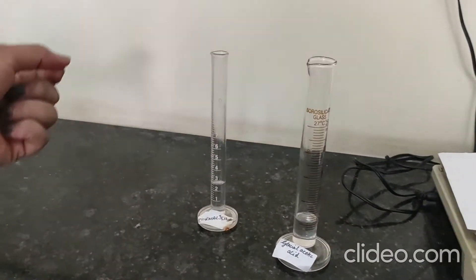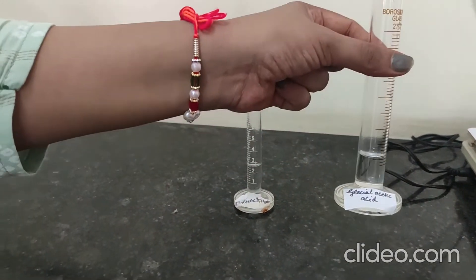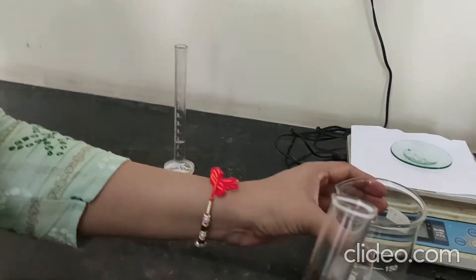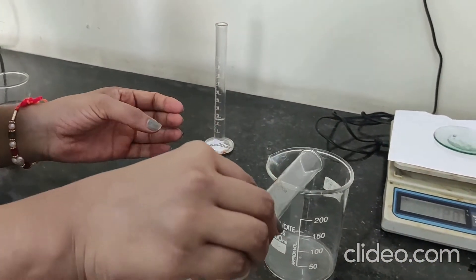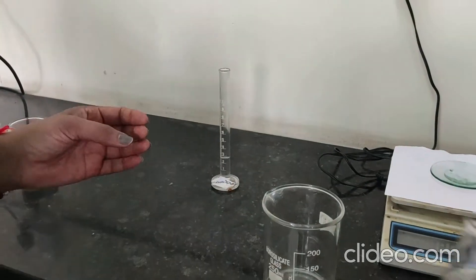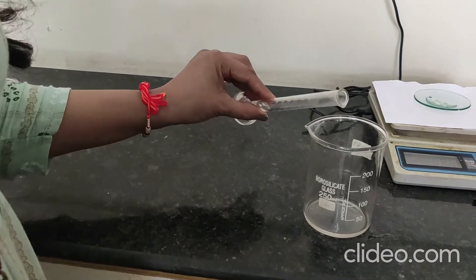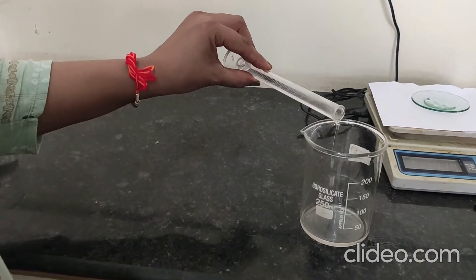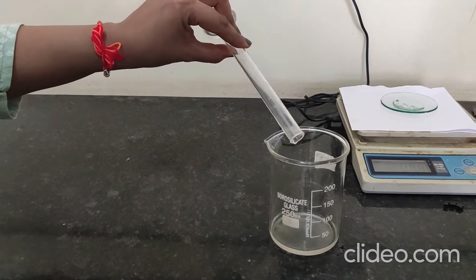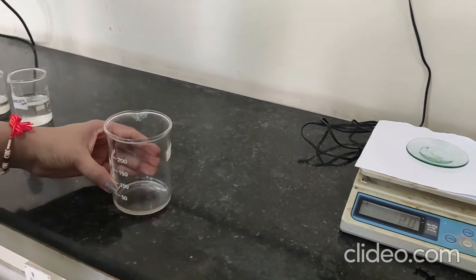Now measure 5 ml glacial acetic acid solution. Put it in the beaker. Now add 2.5 ml formaldehyde solution. Now add 2 grams phenol.